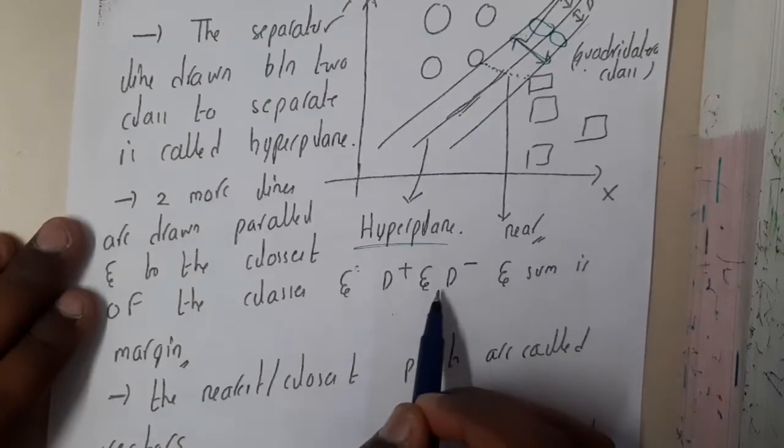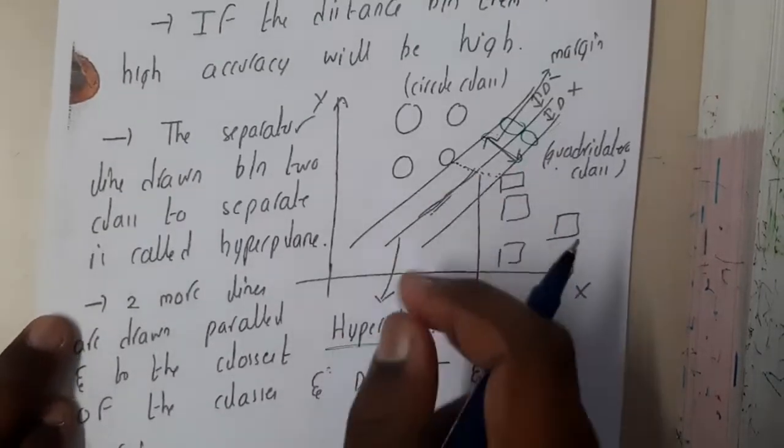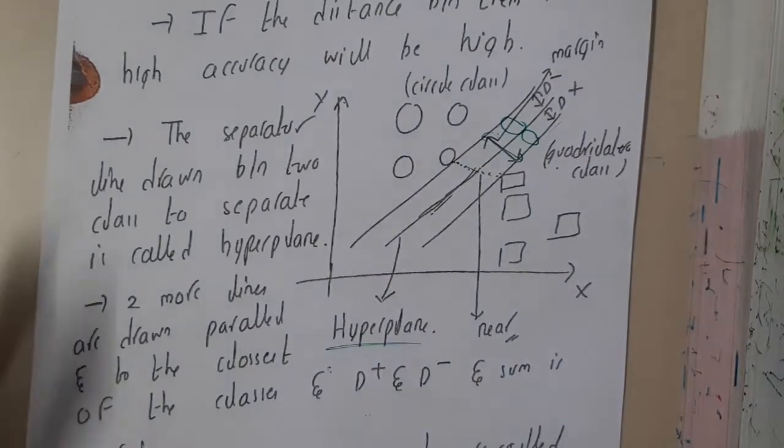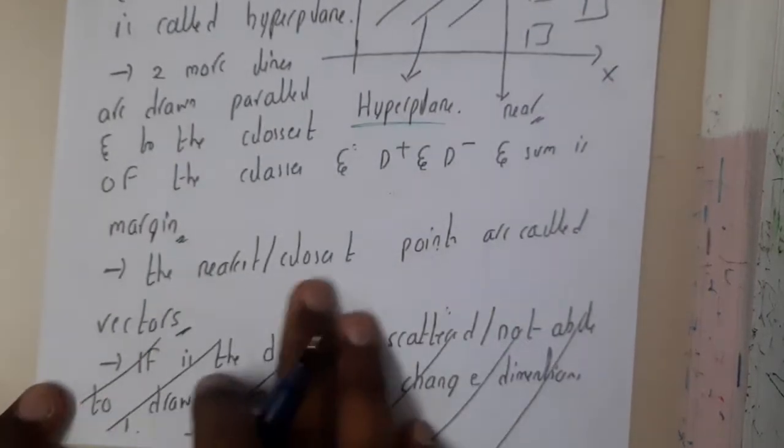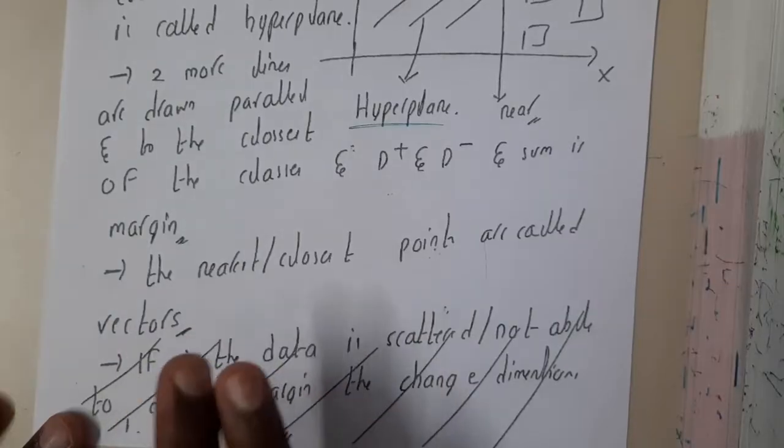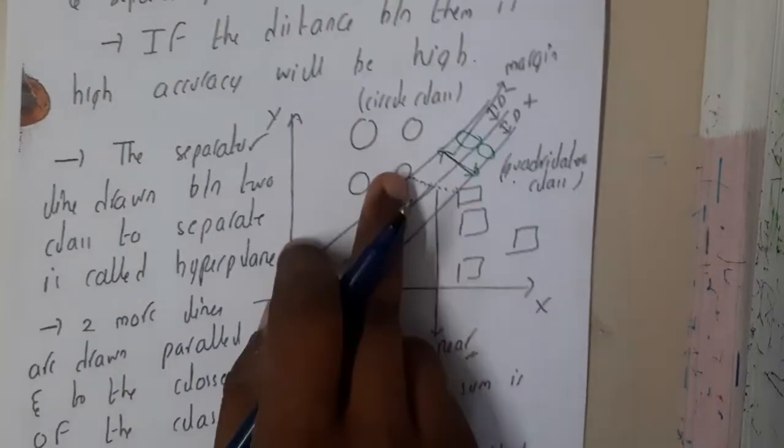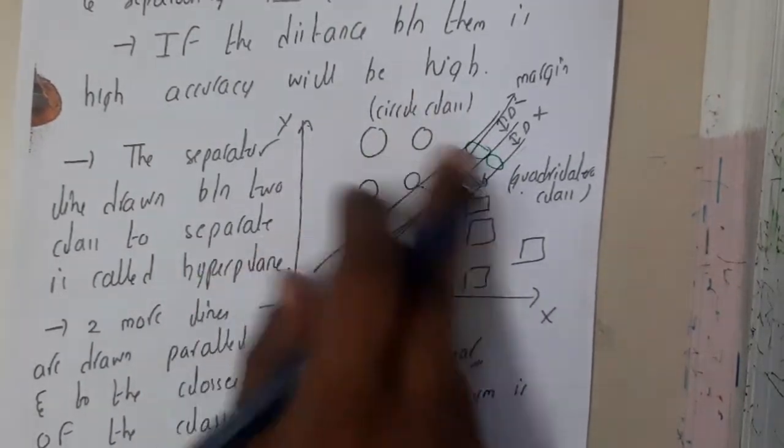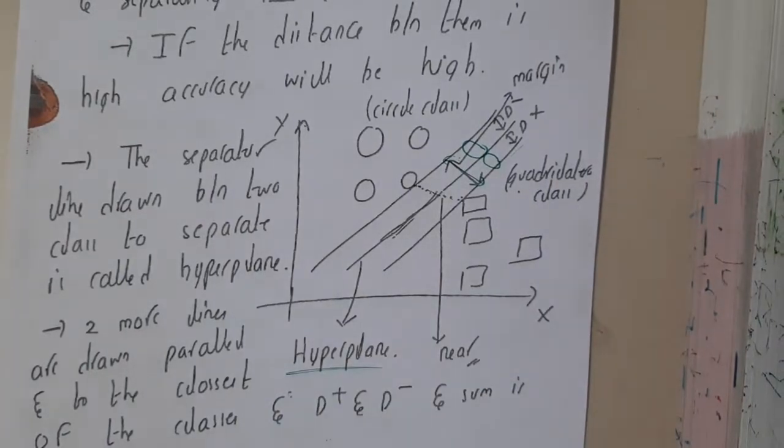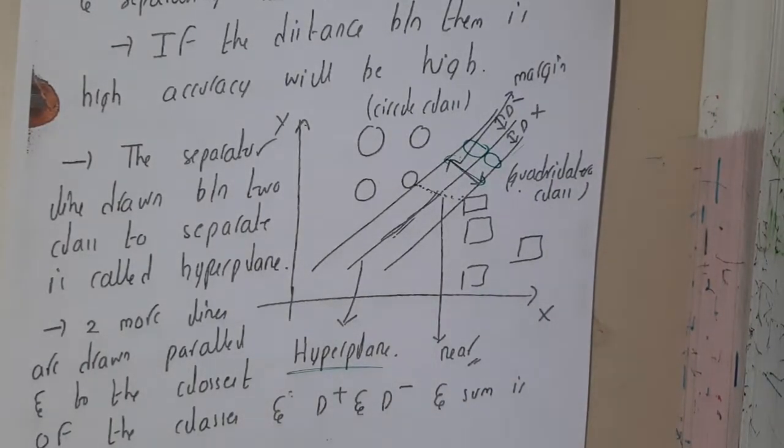The nearest or the closest two points are called vectors. So these things are the circle class and this is quadrilateral class. So this is how the SVM classifier works. Basically, it will create a 2D plane graph in which it will be separating each and every object into different groups and it will be identifying the new thing.